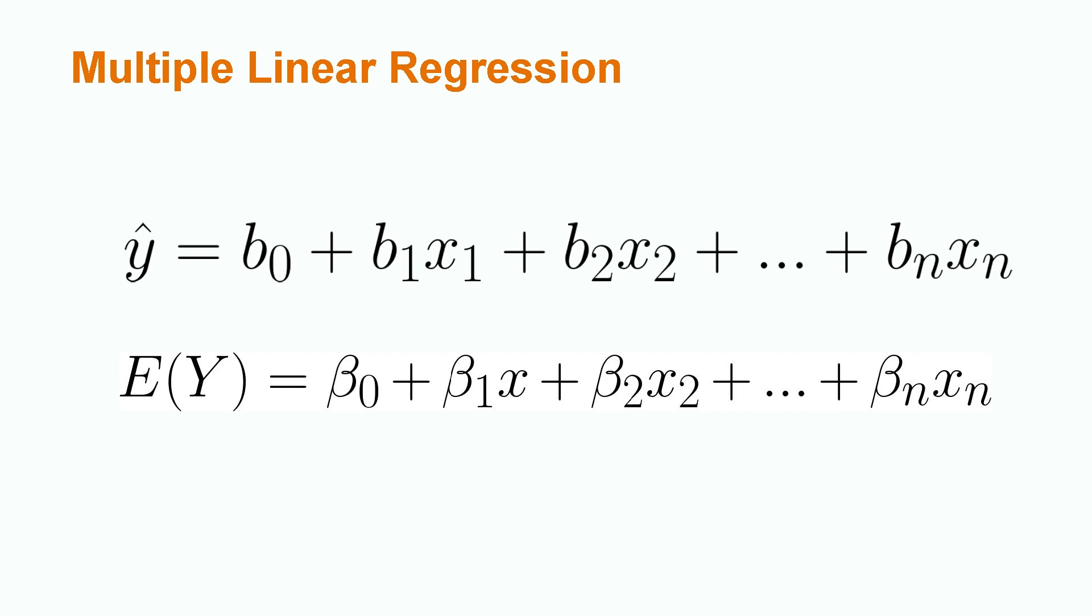We would use multiple linear regression where hours exercised is x1, number of close friends is x2, and number of weekly therapy sessions is x3. Multiple linear regression uses the same formulas as simple linear regression, just using more b values for samples and more betas for populations.